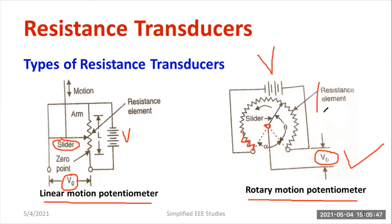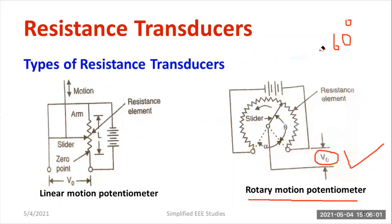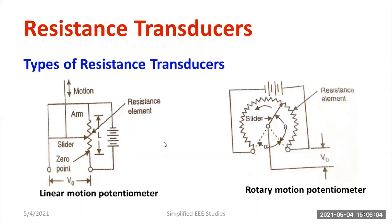Normally, we use a wire wound type resistor. The scale will be zero to 60 degrees. I'll be putting more information regarding these kinds of transducers in the next slide, so you can go through the next slide.